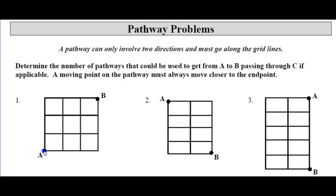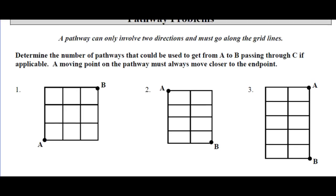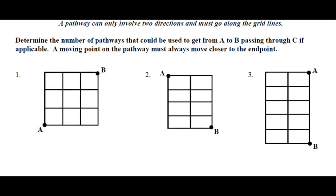The answers at the bottom of the page are the combinatorics answers using permutation — that's simply counting out. I've got to go six blocks, three of them are north and three of them are east. So it's six factorial over three factorial, three factorial.